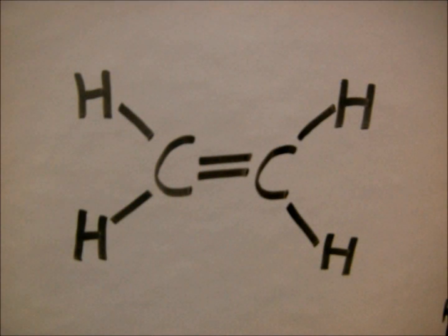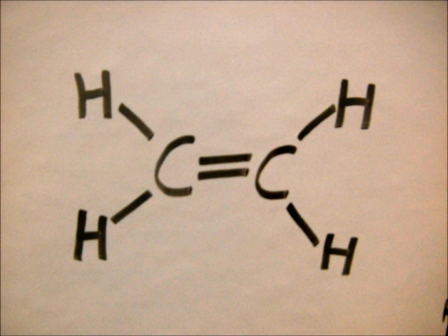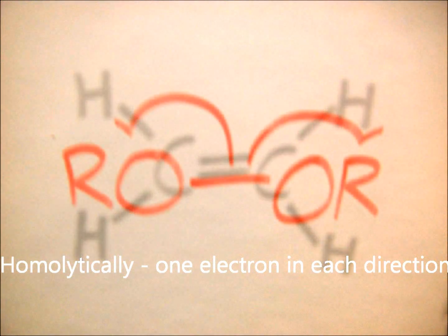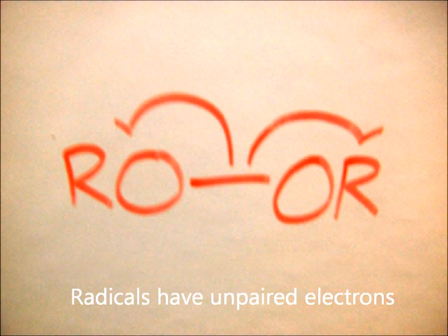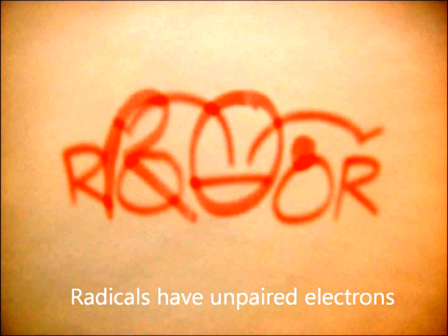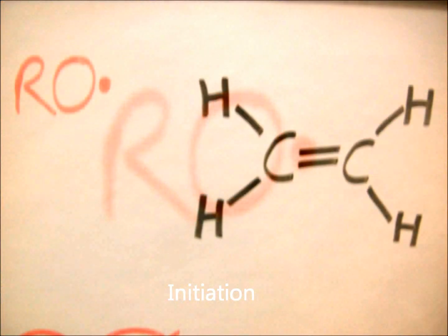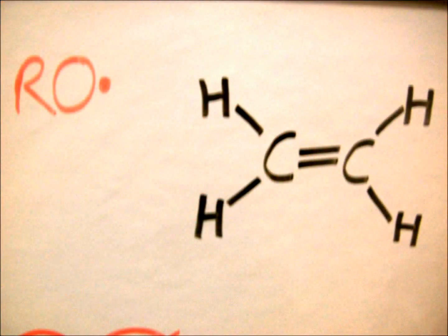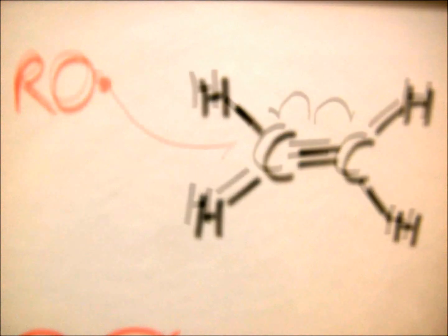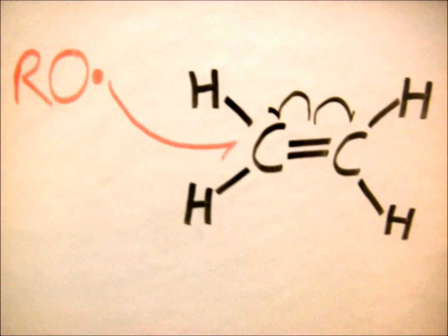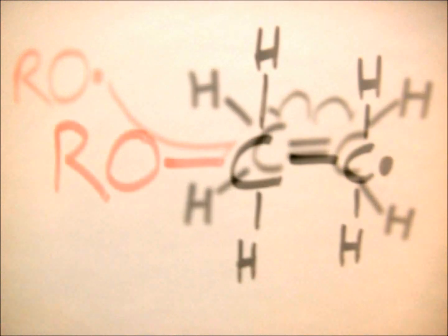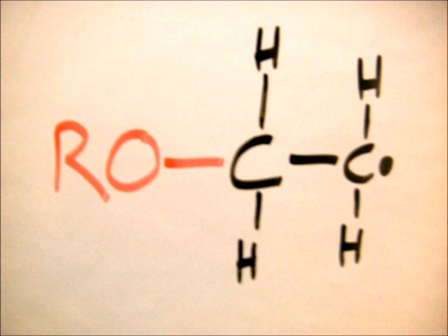Free radical polymerisation occurs when an alkene double bond homolytically opens. Initiation is instigated by a molecule with an unpaired electron, such as a peroxide, that is stable at room temperature. When the oxygen single bond is broken, a radical is formed. This active radical is what reacts with the alkene.